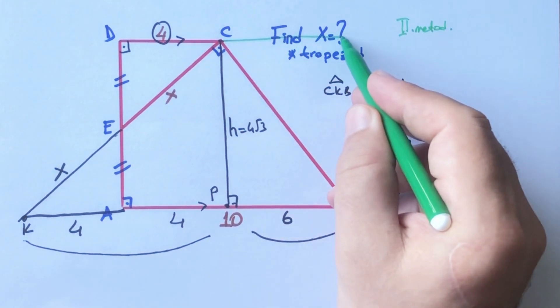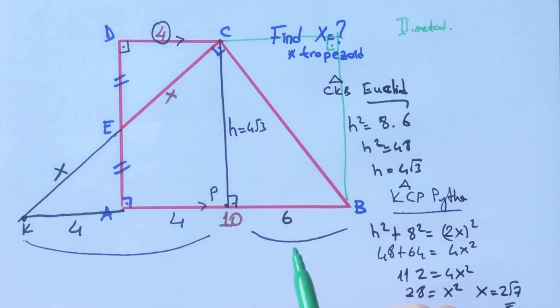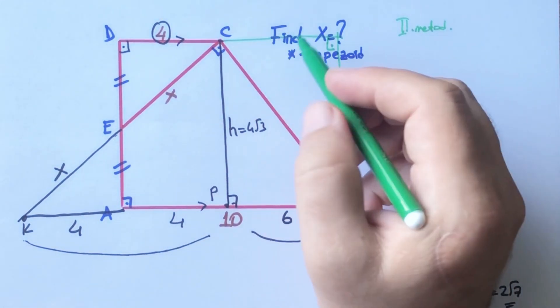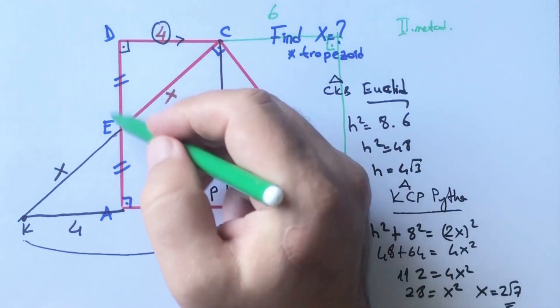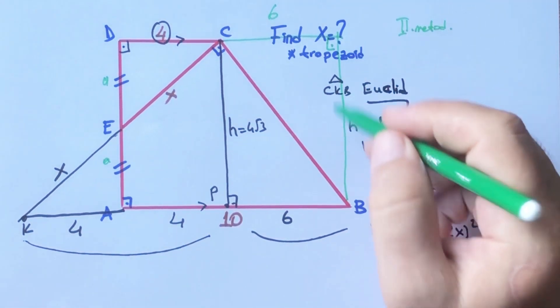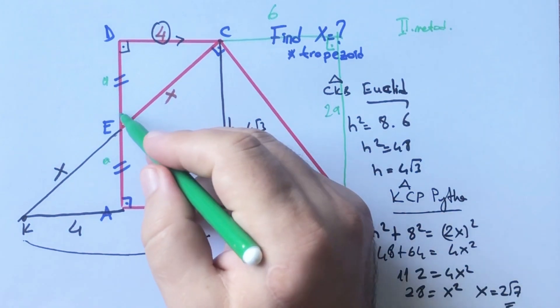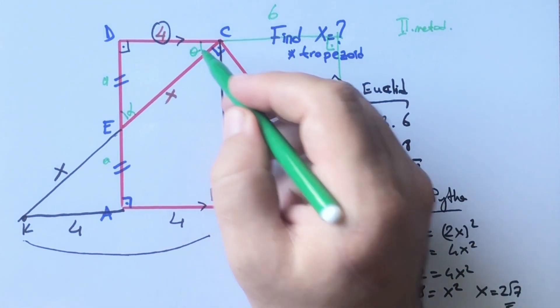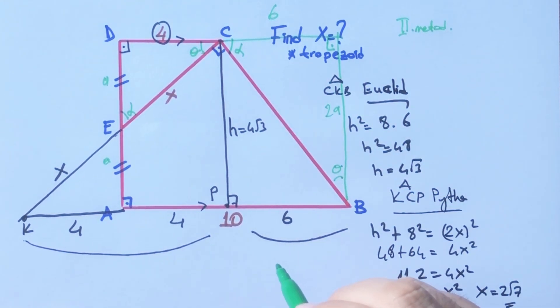Let's extend this corner and connect here. If here is 10 units, 6 units left here. Let's call these equal parts a units. This part is also 2a. And then let's call here alpha, here must be alpha, and here must be theta.